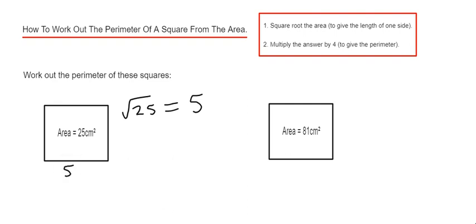So that is the length of one side. Then we multiply that answer by four because we have four sides. 5 times 4 is 20 cm.